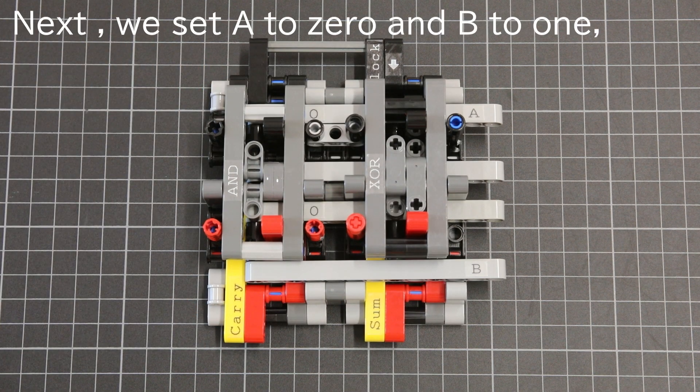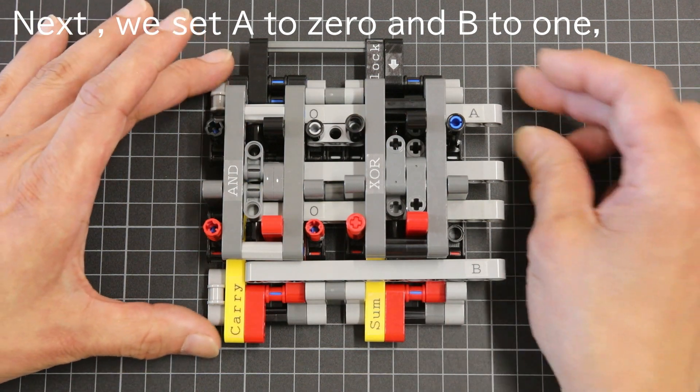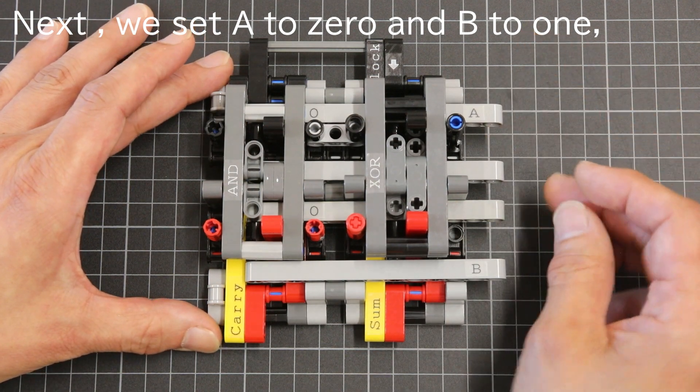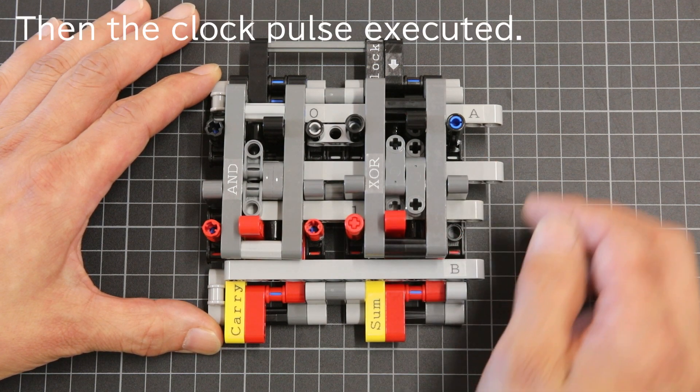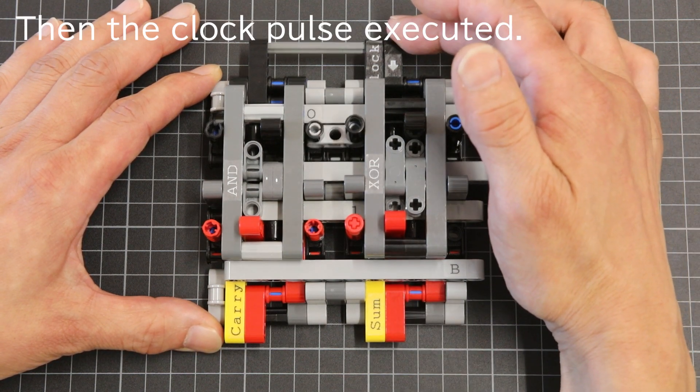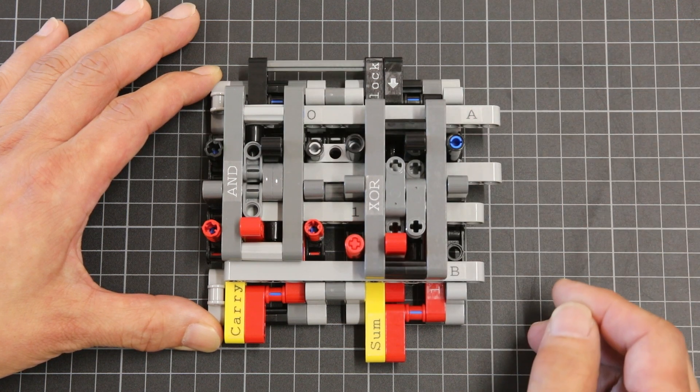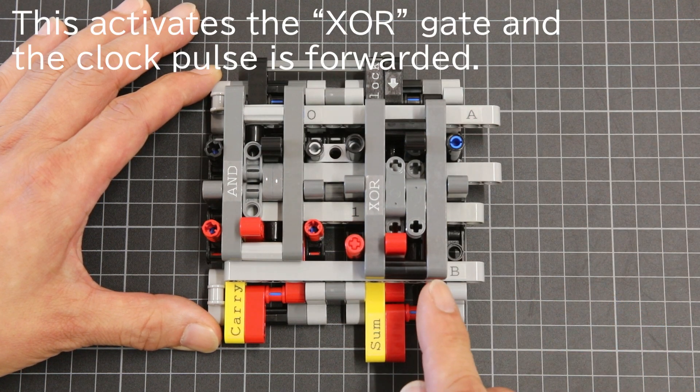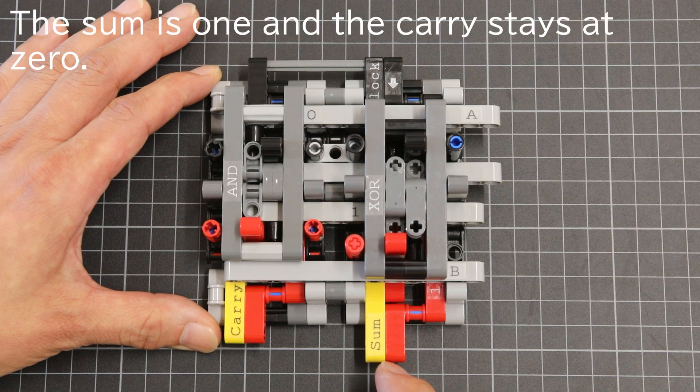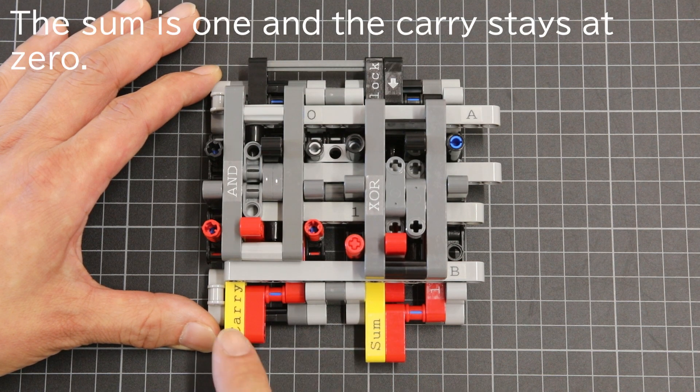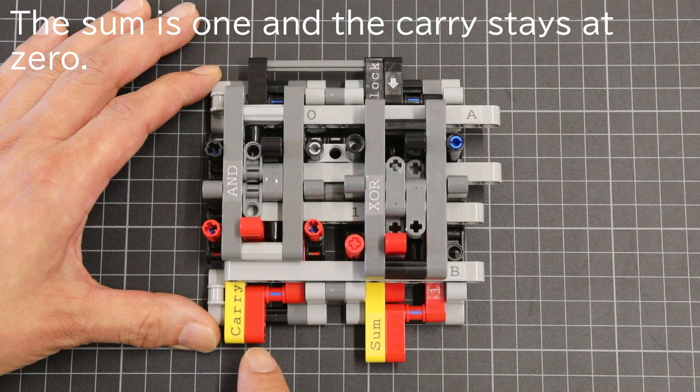Next, we set A to 0 and B to 1, which means 0 plus 1. Then the clock pulse is executed. This activates the XOR gate and the clock pulse is forwarded. The sum is 1. The carry stays at 0.